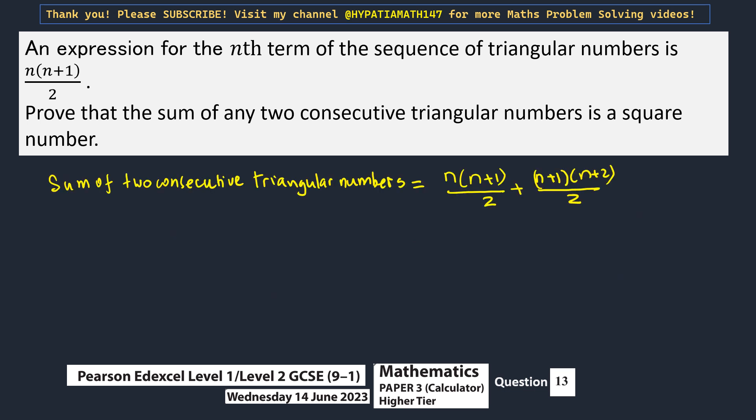What we get is, if you simplify, n plus 1 out of 2 is common in both these expressions. So when you do n plus 1 out of 2 in brackets, then n plus n plus 2. So that is equal to n plus 1 out of 2 times, n plus n is 2n, so 2n plus 2.